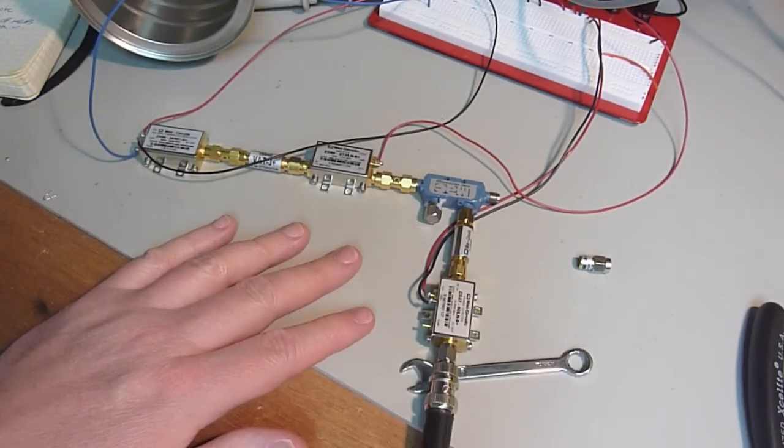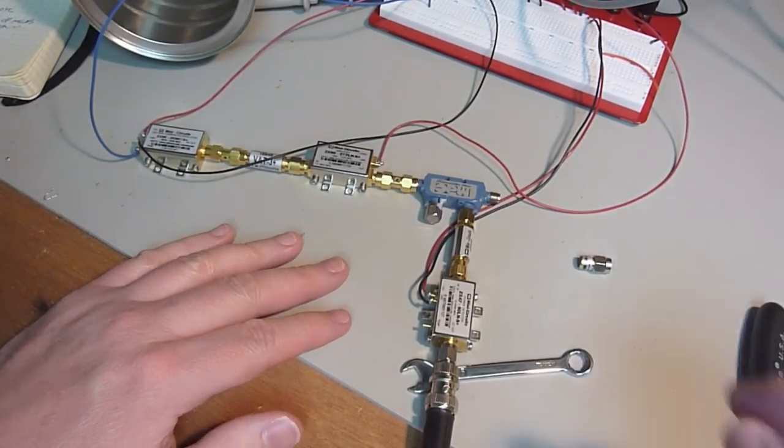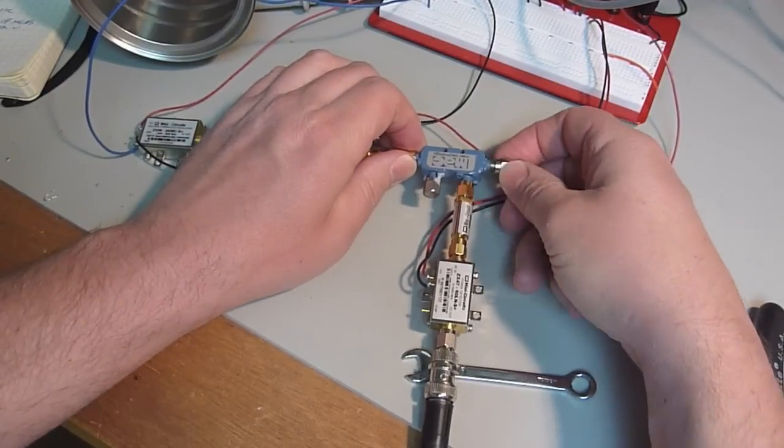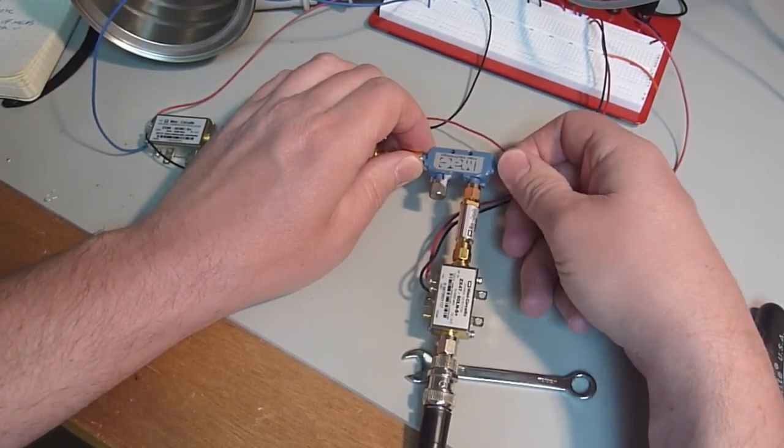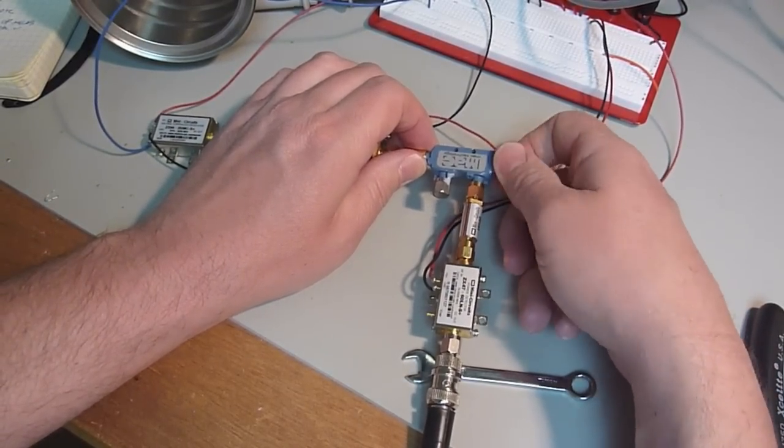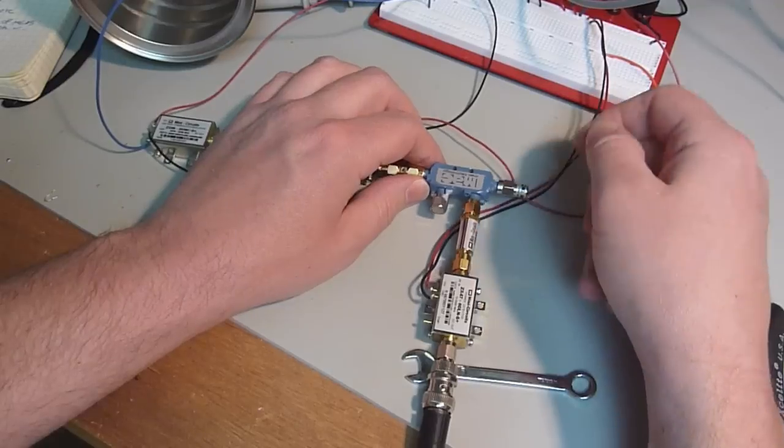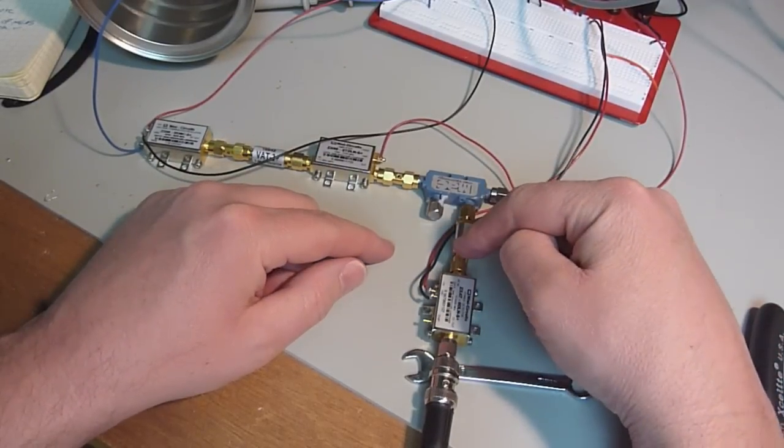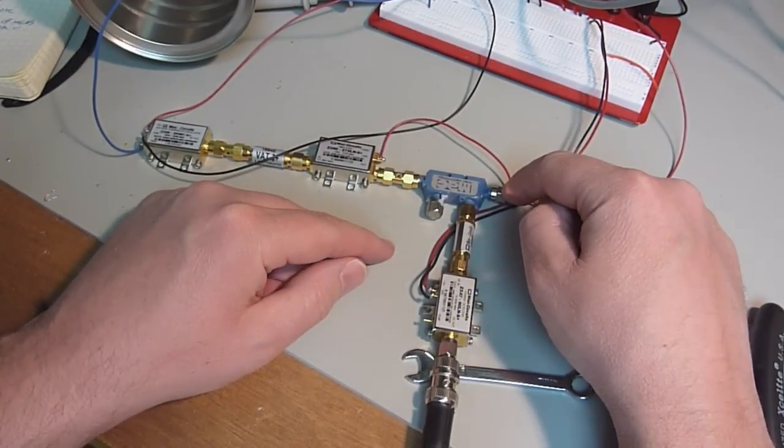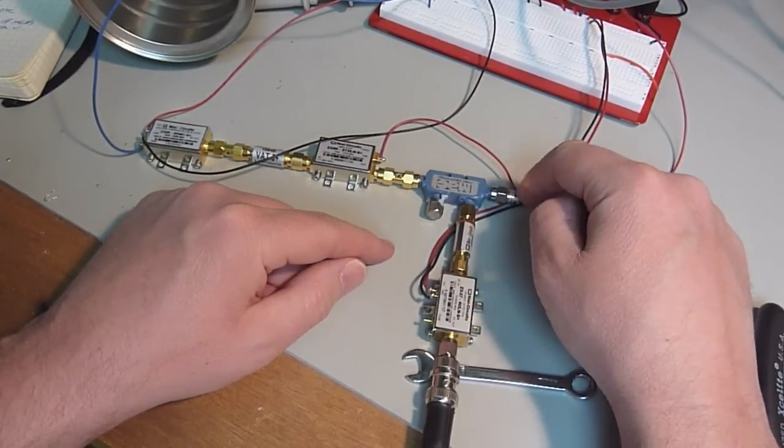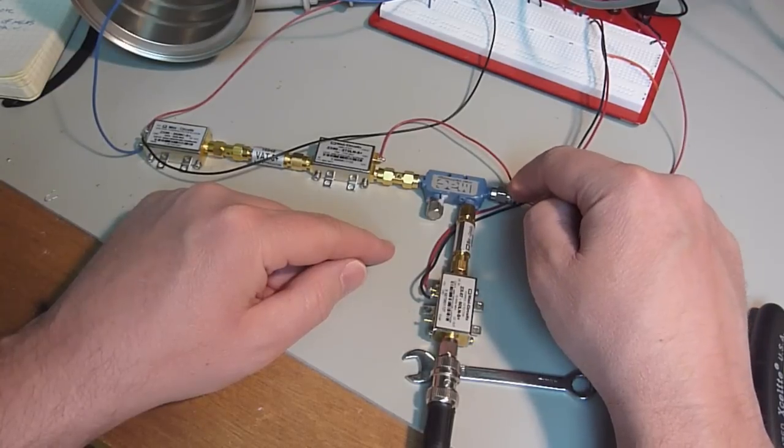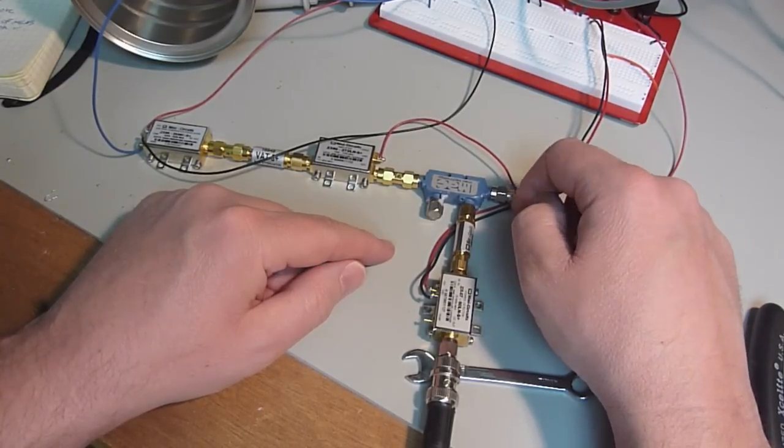So to get started, what we'll do is we'll put a 50 ohm terminator in place of an antenna and we should see almost no reflected power in this case, because this should present an almost ideal match to the outgoing power and it should all be absorbed by the resistor in here. So we can look at the scope and see what we get.